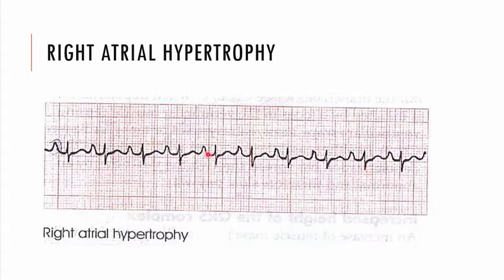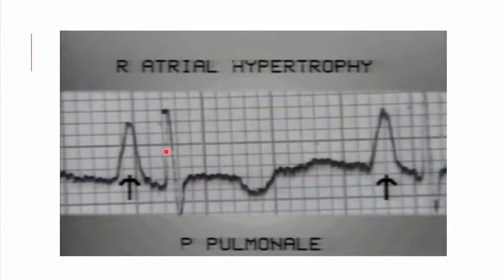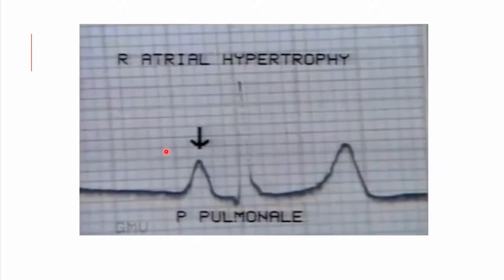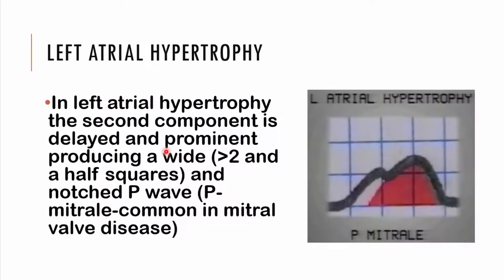Here is an example of a peaked P wave. I shall leave a link in the description with all the ECG presentations where you can visit the Dropbox. Here is another ECG of a peaked P wave or P pulmonale, and another description of P pulmonale in right atrial hypertrophy.